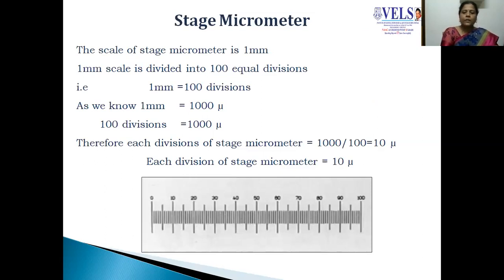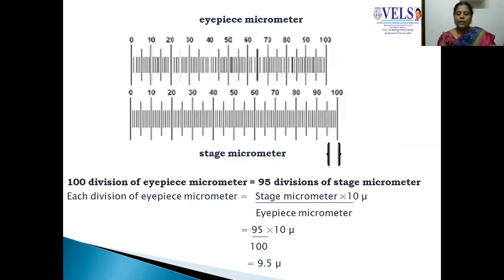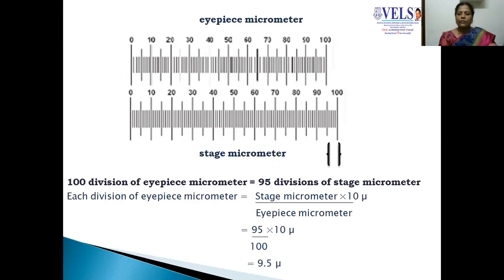This is the stage micrometer. The total length of the stage micrometer here is 1 mm, which is divided into 100 divisions. We know that 1 mm equals 1000 microns, so 100 divisions corresponds to 1000 microns. Thereby, each division of the stage micrometer is equal to 10 microns. This is a known value. By using the stage micrometer, we now coincide or align its scale with the IPS micrometer scale. Here, the 100th division of the IPS micrometer is aligned with 9 to 50 units of the stage micrometer. Using the formula — stage micrometer divided by IPS micrometer multiplied by 10 microns — we get a value of 9.5 microns, which means each division of the IPS micrometer is equal to 9.5 microns.